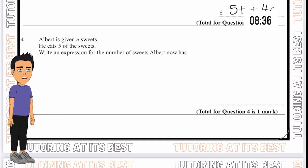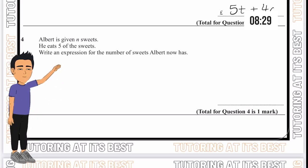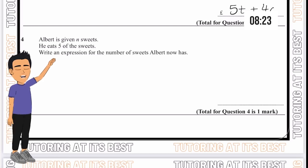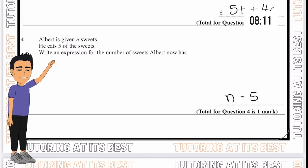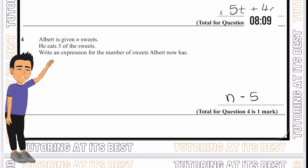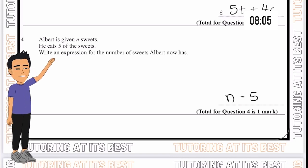Question 4. Albert is given n sweets, and he eats 5 of the sweets. Write an expression for the number of sweets that Albert now has. He had n before and if he's eaten 5, we can simply write n minus 5. We still don't know what n equals, so we write it as n minus 5.